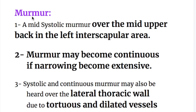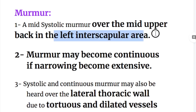There are three different types of murmur in coarctation of aorta. Number one is a mid-systolic murmur over the mid-upper back in the left inter-scapular area.